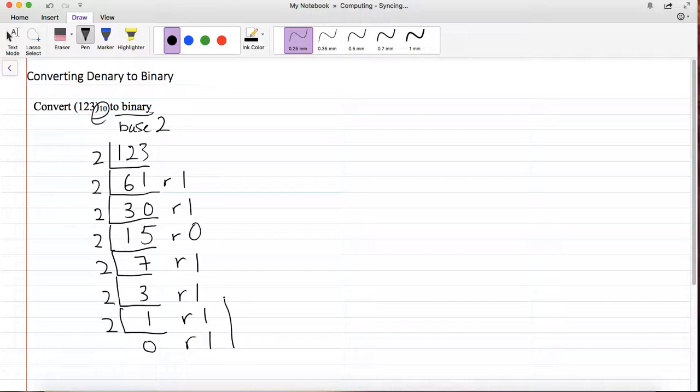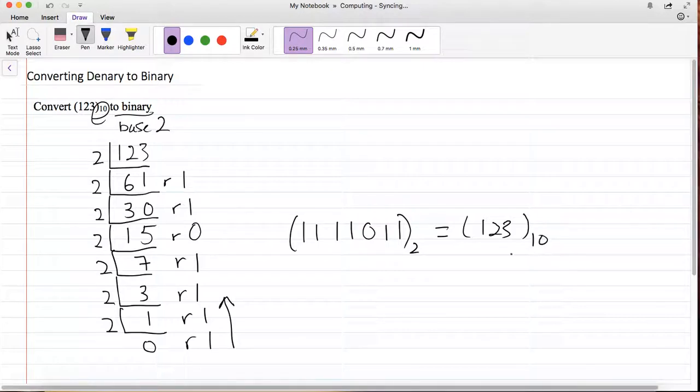So in this case, what is my binary number of 123? I have to do it backwards, so I have 1, 1, 1, 1, 0, 1, 1. So this number over here will be the binary of 123 in base 10.